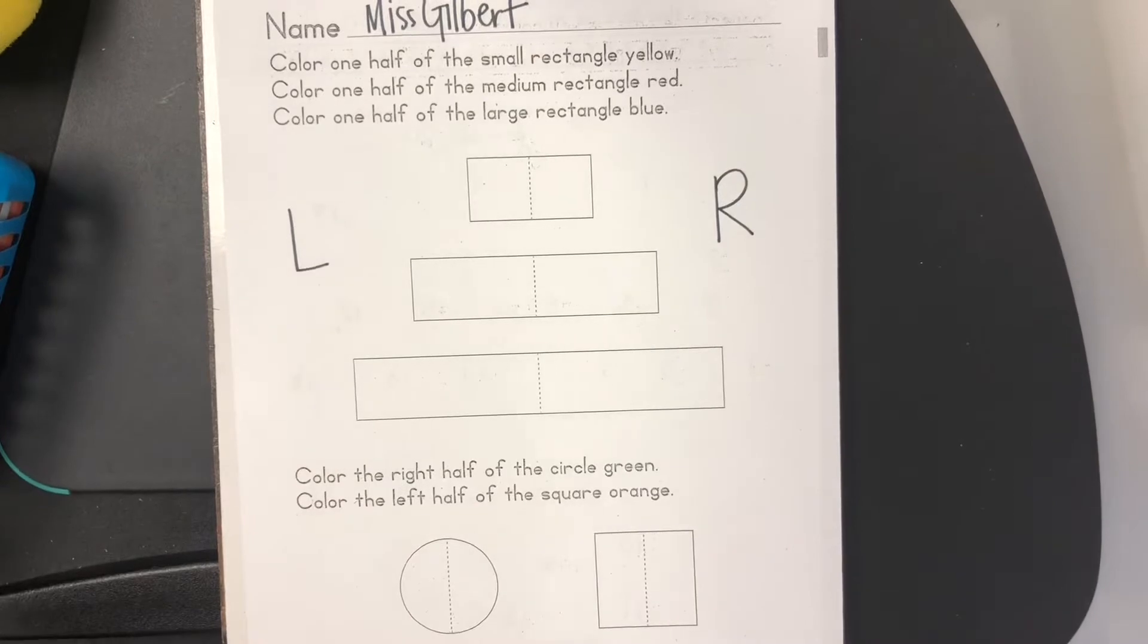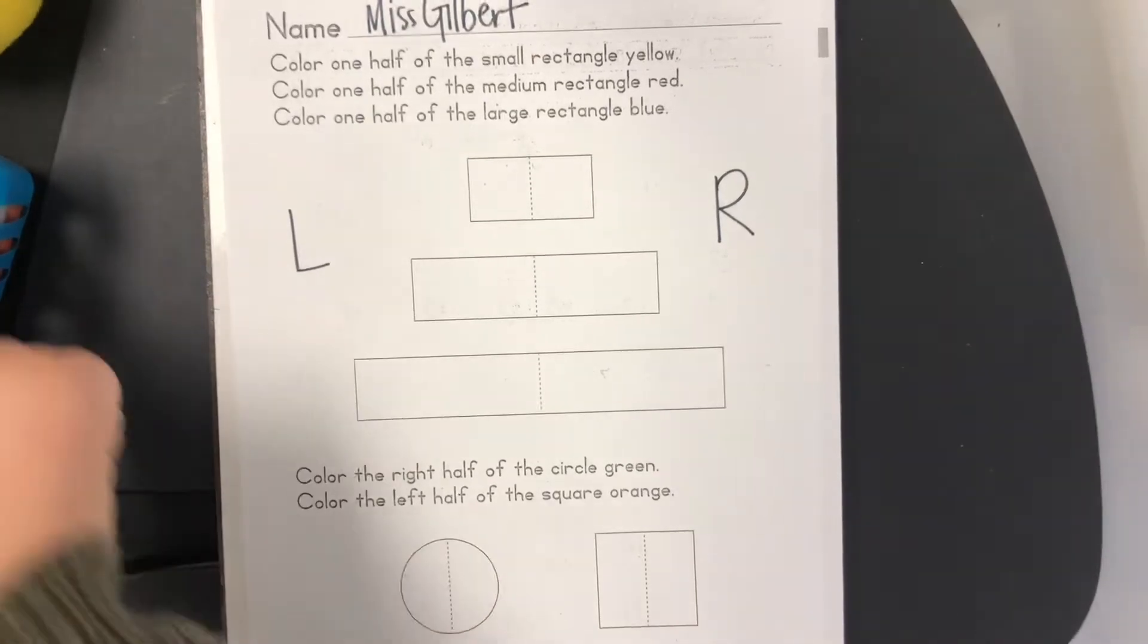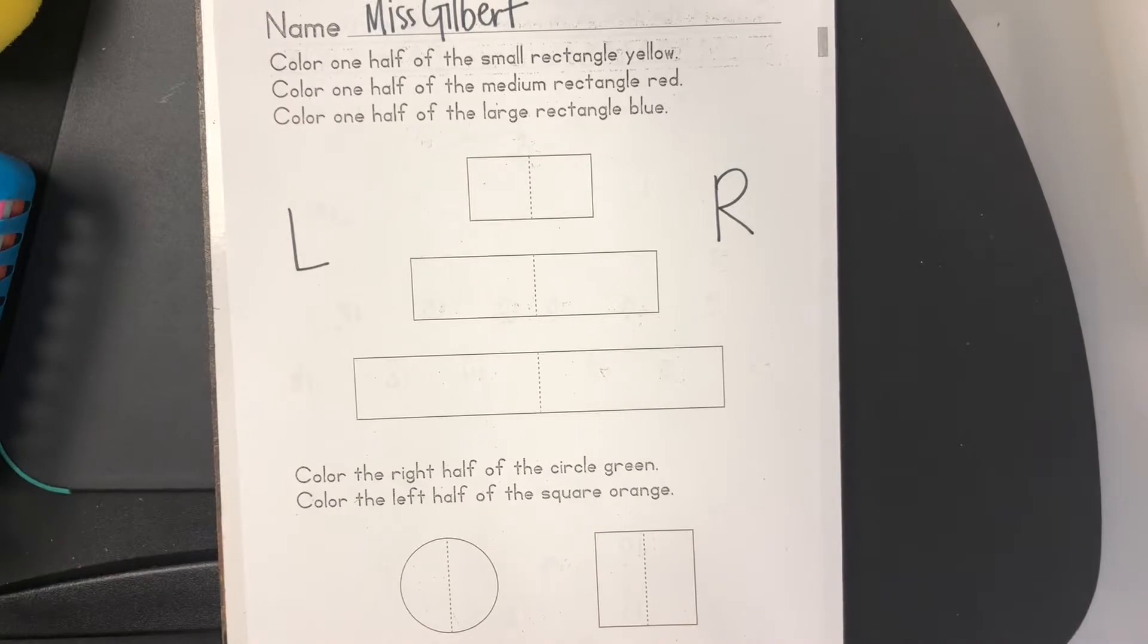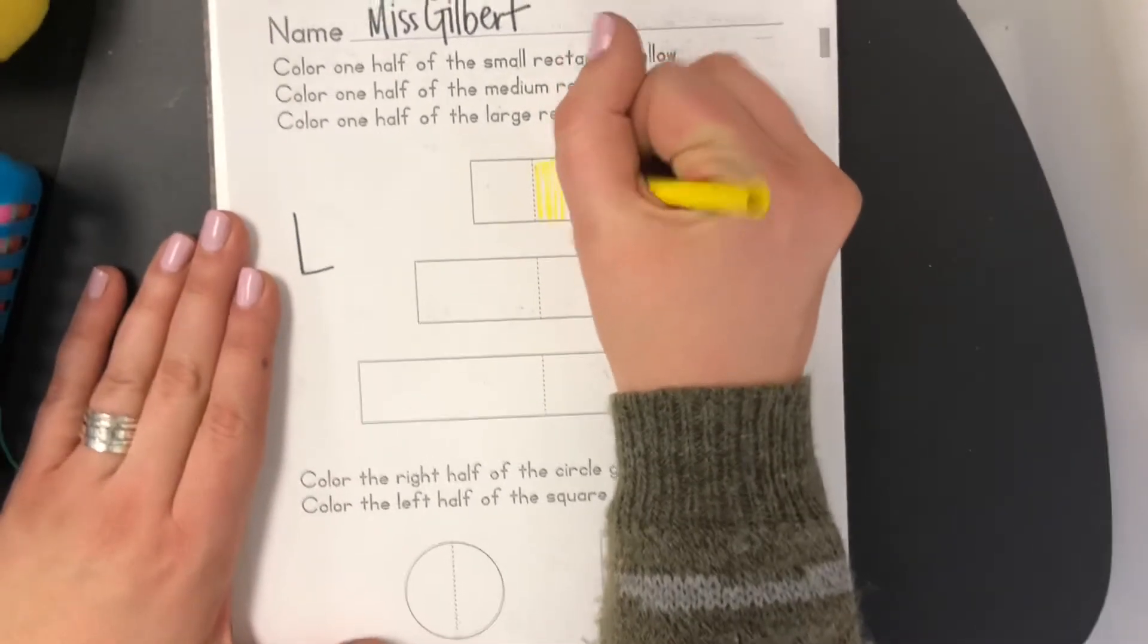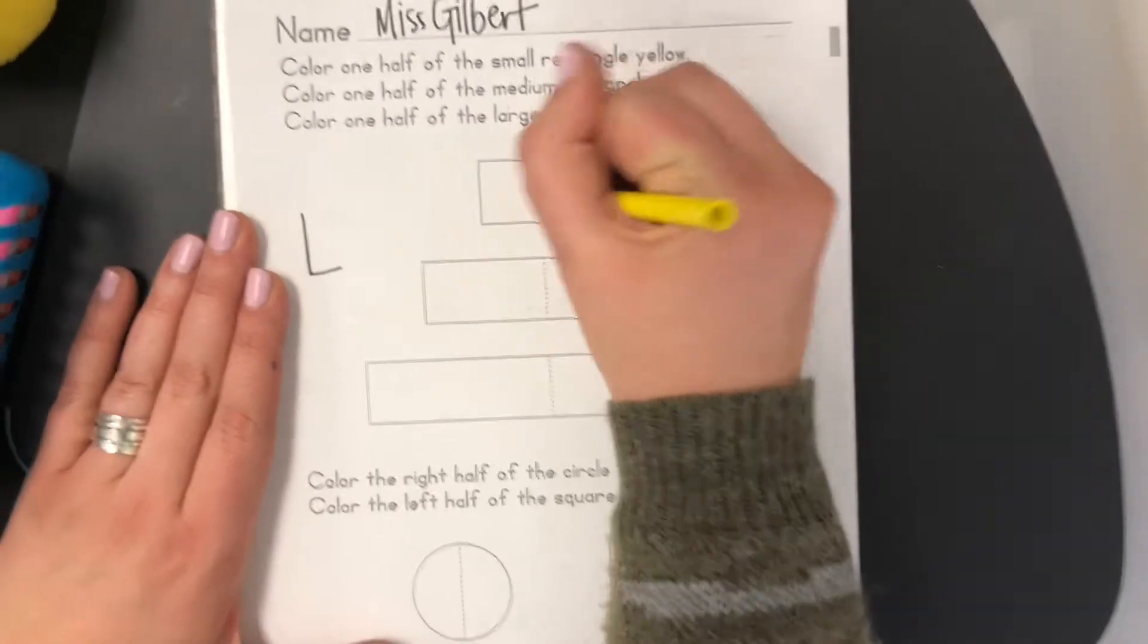Color one half of the small rectangle yellow. You don't have to do the same as me. You can color the left half or the right half. I'm gonna color the right half.